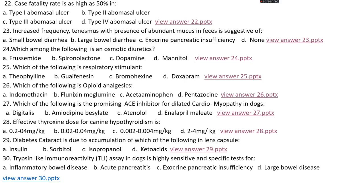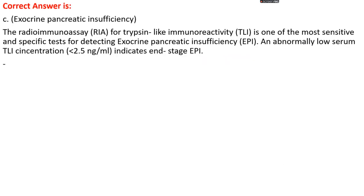Question number 30. Trypsin-like immunoreactivity (TLI) assay in dogs is a highly sensitive and specific test for: options A, inflammatory bowel disease; options B, acute pancreatitis; option C, exocrine pancreatic insufficiency; or options D, large bowel disease. The right answer is option C, exocrine pancreatic insufficiency. The radio immunoassay for trypsin-like immunoreactivity is one of the most sensitive and specific tests for detecting exocrine pancreatic insufficiency. Abnormally low serum TLI concentrations — less than 2.5 nanograms per mL — indicate end-stage exocrine pancreatic insufficiency. That's all for today, thank you.